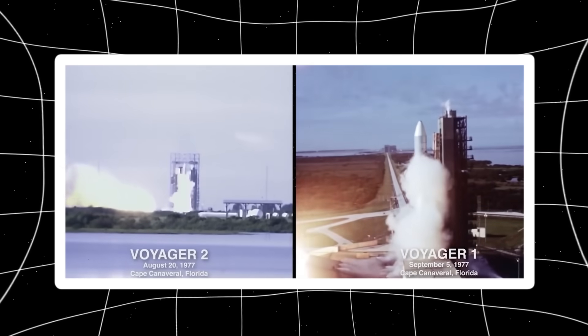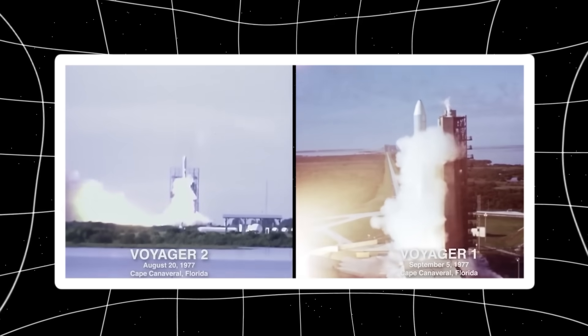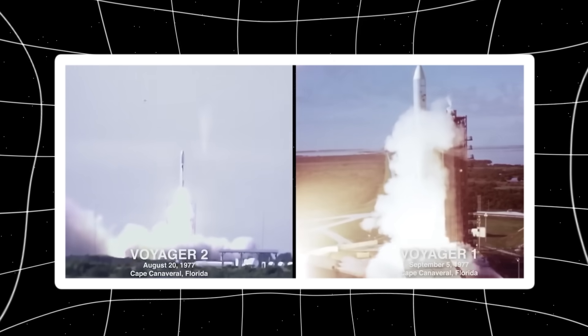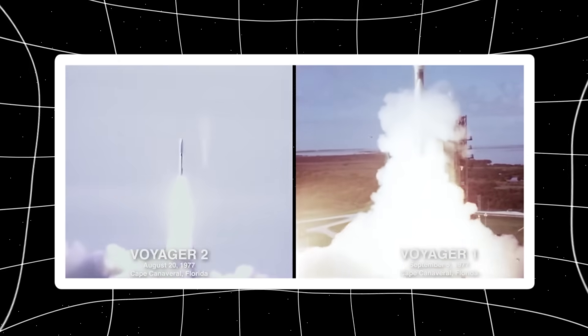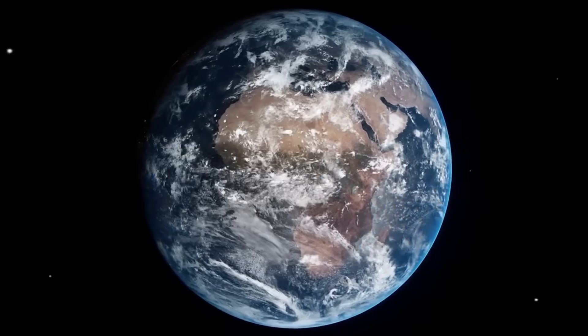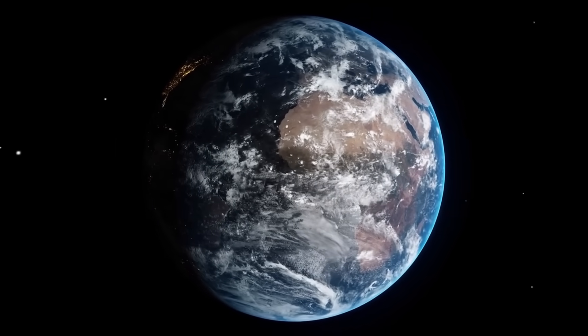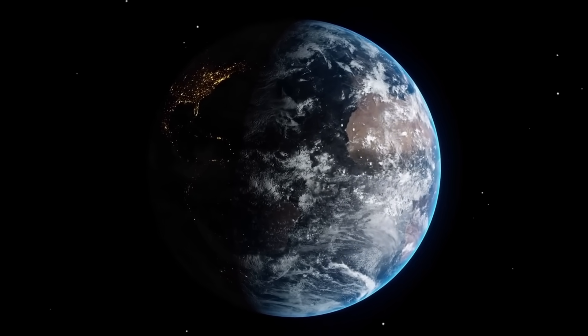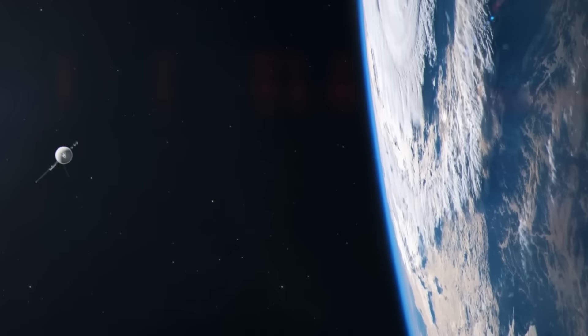Two fragile machines barely the size of a small car were launched into the void with computers less powerful than the average car key today. Their mission was supposed to be modest: five years of data gathering from Jupiter and Saturn. But what happened next, no one could have predicted.